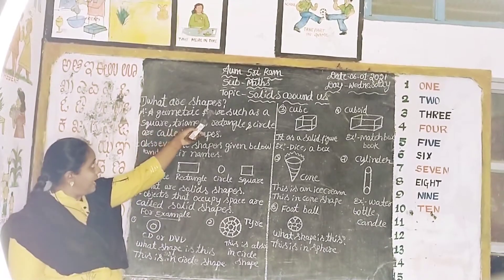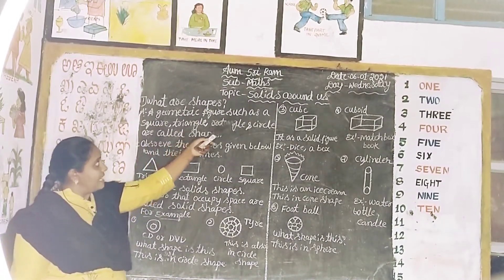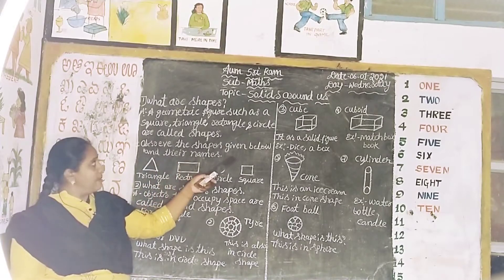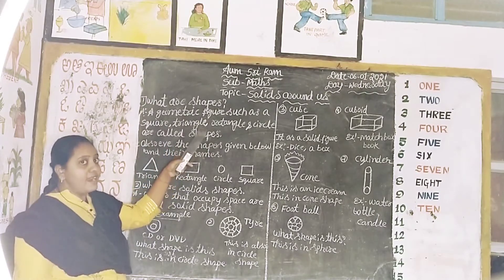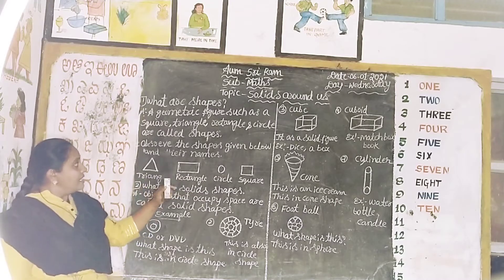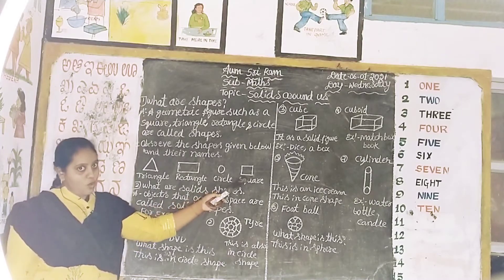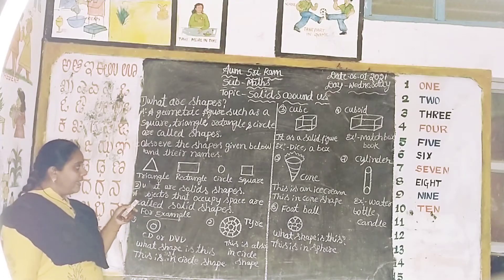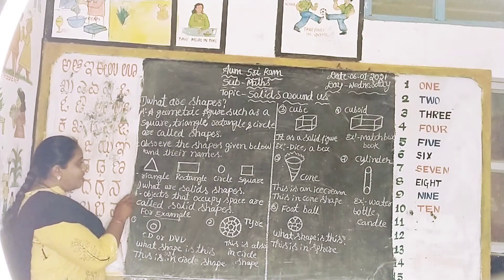Repeat. What are shapes? Shapes. A geometric figure such as a square, triangle, rectangle, and circle are called shapes. Observe the shapes given below and their names: triangle, rectangle, circle, square. What is this? This is a triangle. T-R-I-A-N-G-L-E. Triangle. It has three sides.